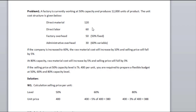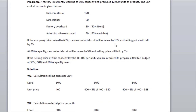Direct material is present per unit. Direct labour is present per unit. Factory overhead is present per unit. Of the factory overhead, 60% is variable and 60% is fixed.